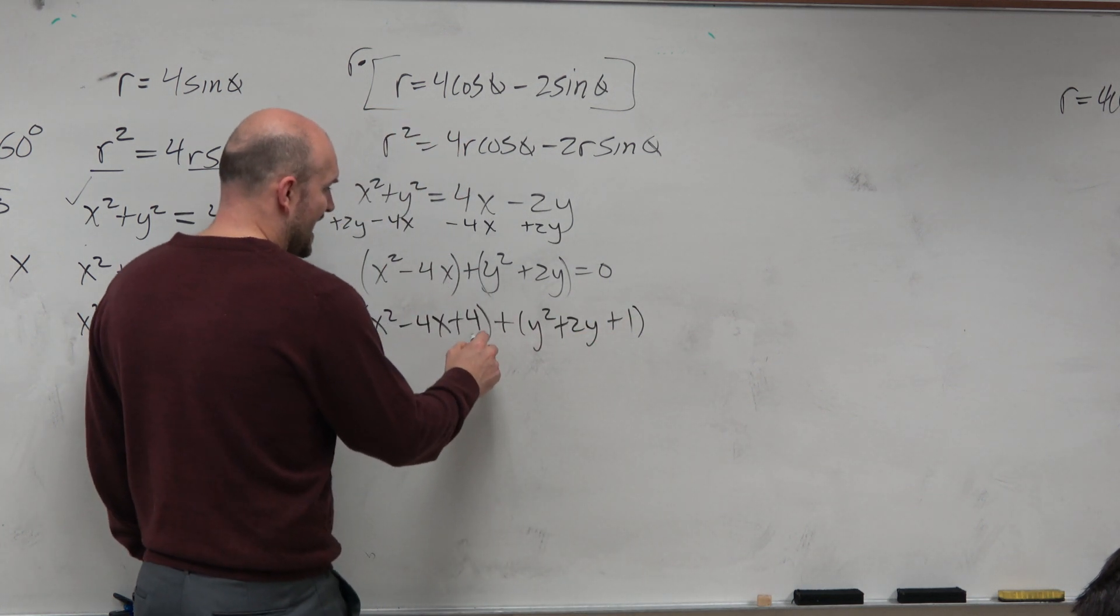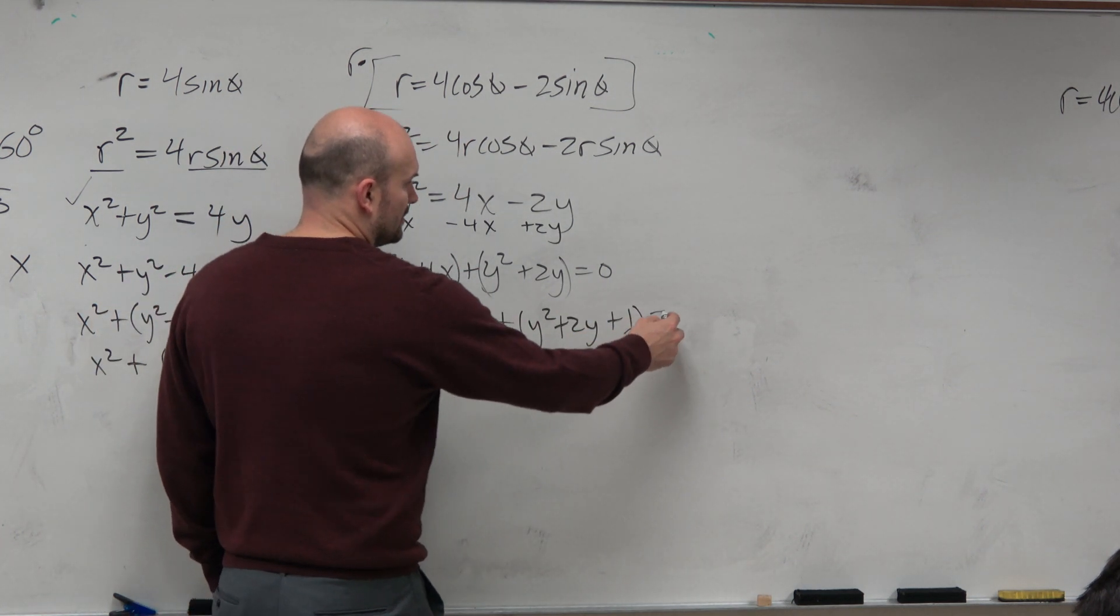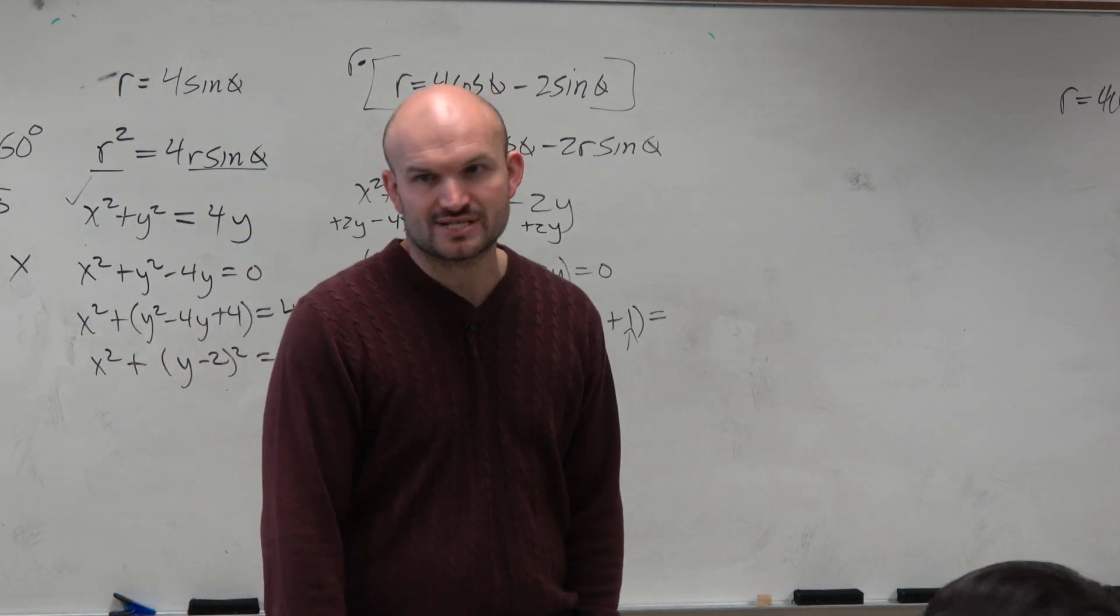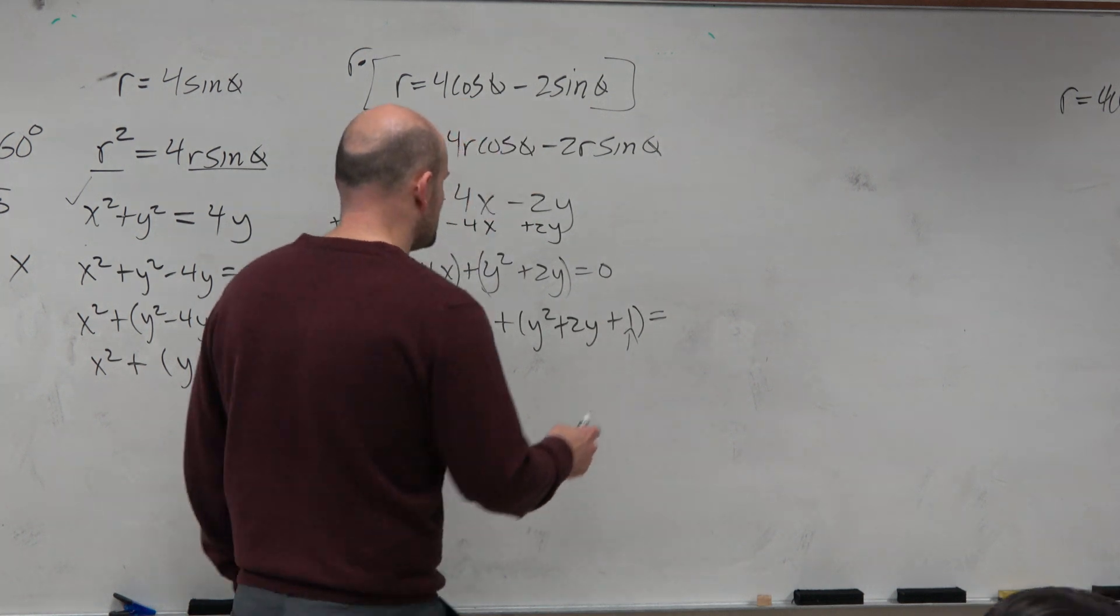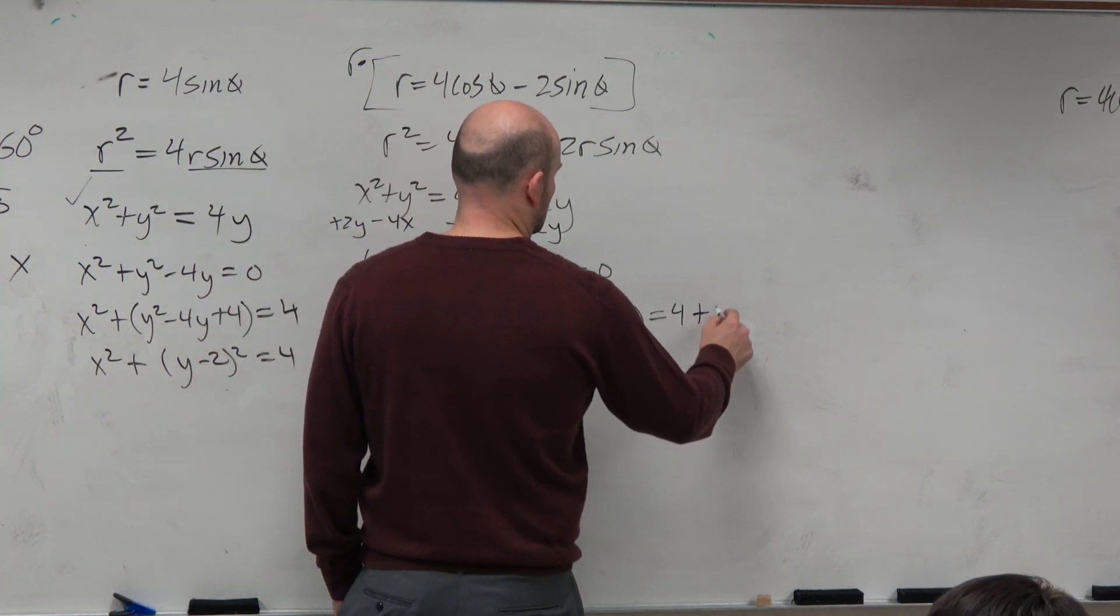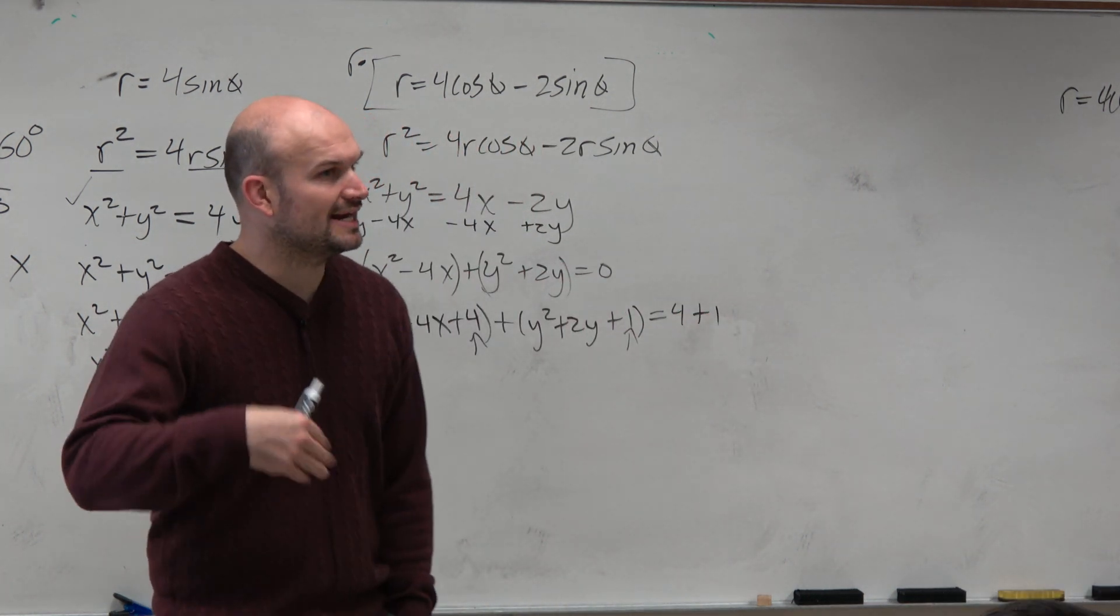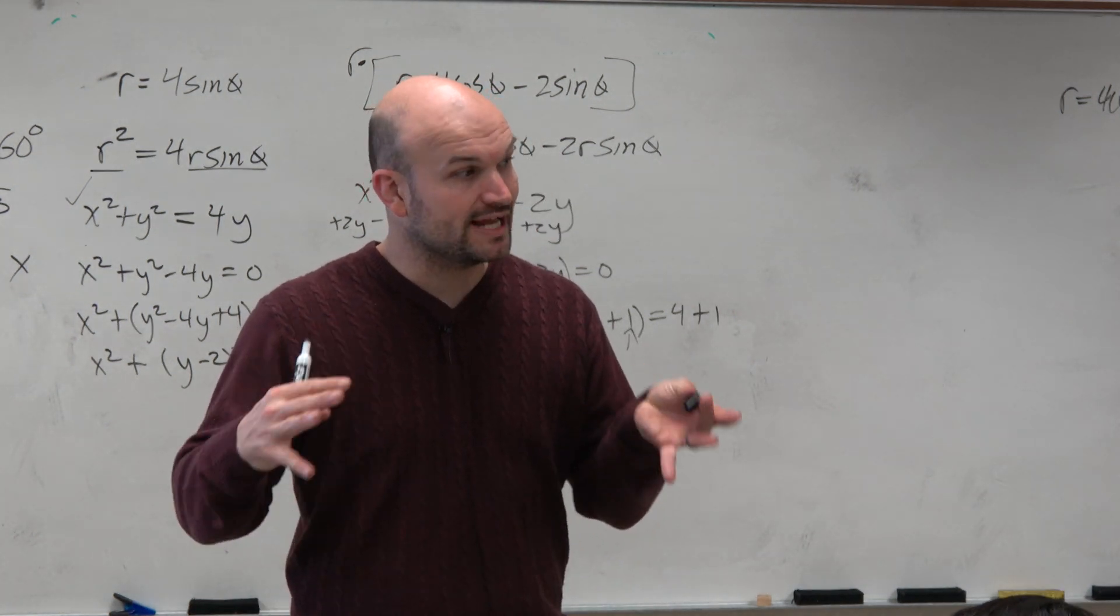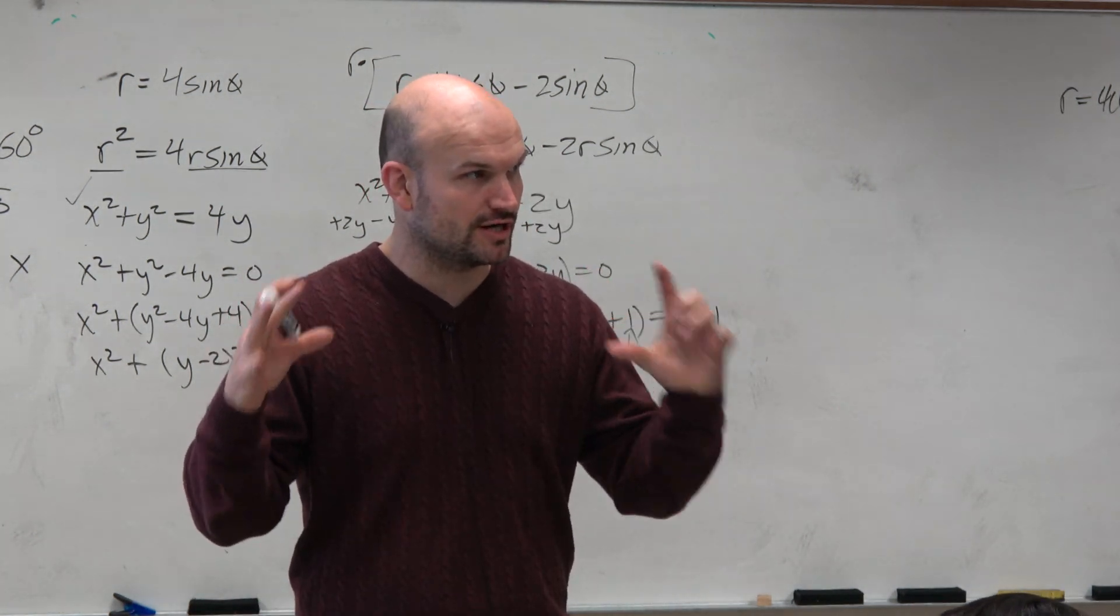So what I just did is I added a 4 and I added a 1. Now we recognize you just can't randomly add numbers to an equation and still say it's an equation, unless you add them to the other side. Why did I add a 4 and a 1? By adding a 4 and a 1, what I created was perfect squared trinomials.